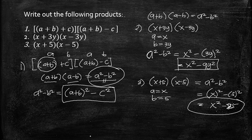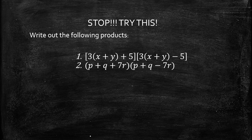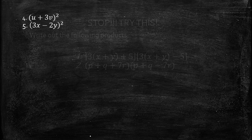Stop and try: write out the following products. Number one: the quantity (3(x + y) + 5) times (3(x + y) − 5). Number two: (p + q + 7r)(p + q − 7r). Take note — you may rearrange terms to fit the special product form.